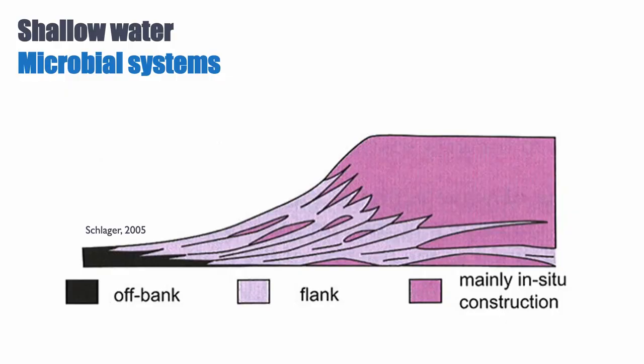So we can find examples of shallow water M factories, and here's an example of a diagram of how this would look. You would have lots of mud and the core microbial facies on the top of the shelf. And then you'd have steep-sided geometries with well-developed flanks where you would have transported sediments. And this would all be an M factory.